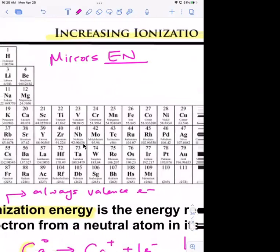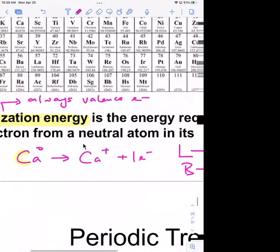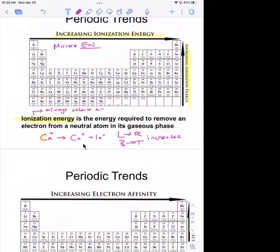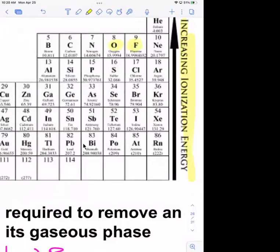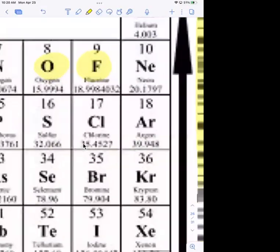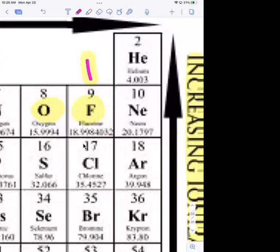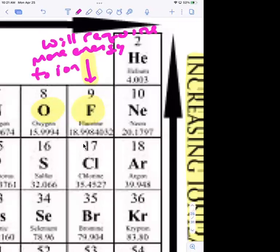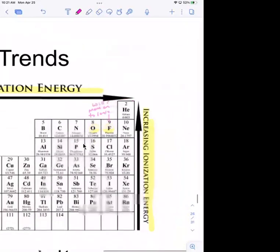Ionization energy mirrors electronegativity — the trend is increasing left to right and bottom to top. For example, comparing fluorine versus oxygen: it takes more energy to ionize fluorine than to ionize oxygen. Fluorine ionizes slower than oxygen, so it takes more energy to eject that electron from fluorine's outer shell.